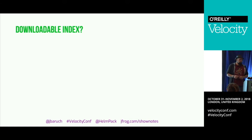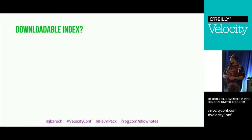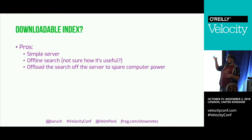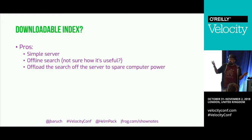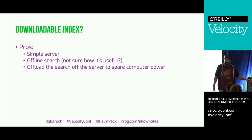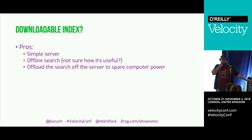The more interesting and problematic issue is the downloadable index. Having a downloadable index has some pros — very simple server, and if you download the index to the client you can search offline without hitting the server. Though that's kind of a weird pro, because when you find what you want, you need to download it anyway, which requires being online.